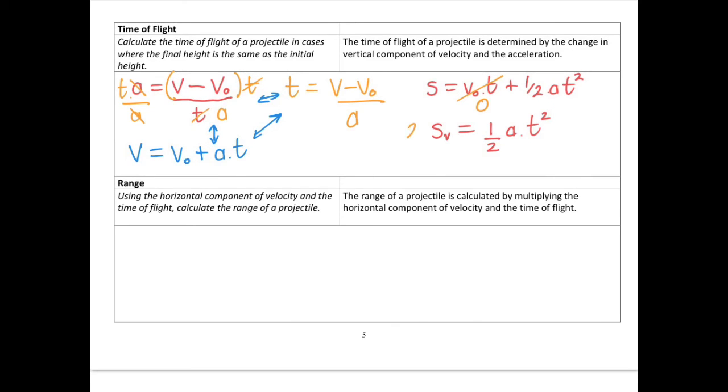If we know the vertical displacement, and remember gravity only acts in the vertical direction, we can calculate the time of flight by rearranging this formula. To get rid of the half, we multiply both sides by two. To get rid of the a, we divide both sides by a. To get rid of the t squared, we take the square root of both sides, and that leaves us with t equals the square root of two times the vertical displacement divided by the acceleration. There's two different ways we can work out time of flight, depending on the situation in the question.